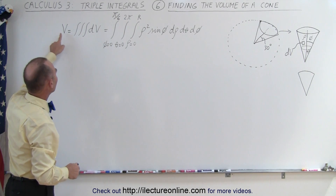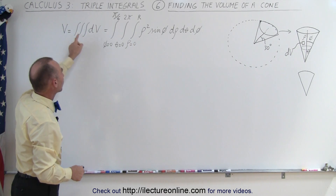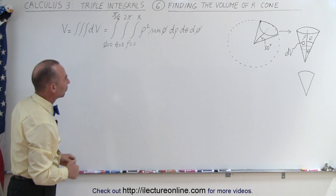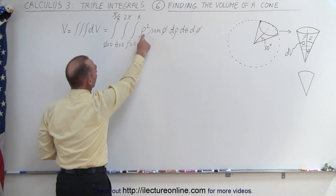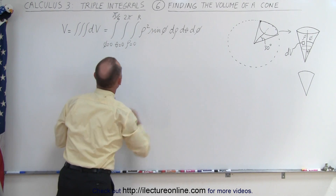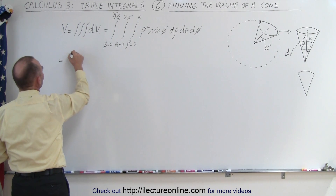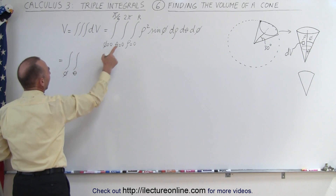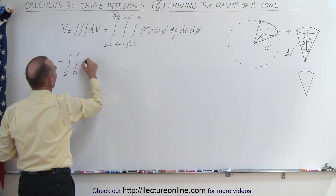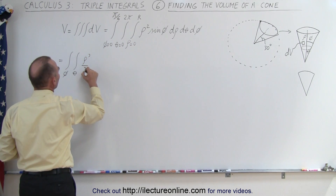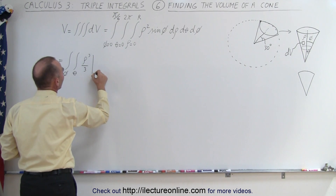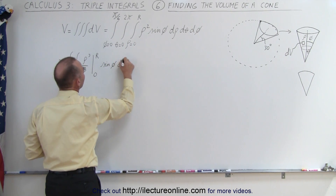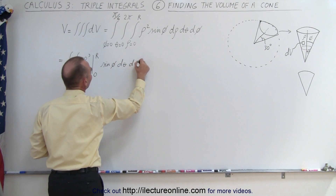So now we can say the volume is equal to the triple integral of dV over the three variables phi, theta, and rho. Starting with the first integral, we're going to integrate over rho squared d rho. We still have the other two integrals — one over theta and one over phi. When we integrate rho squared d rho, we get rho cubed over three evaluated from zero to the radius r. Then we still have sine of phi d theta d phi left for the other two integrals.